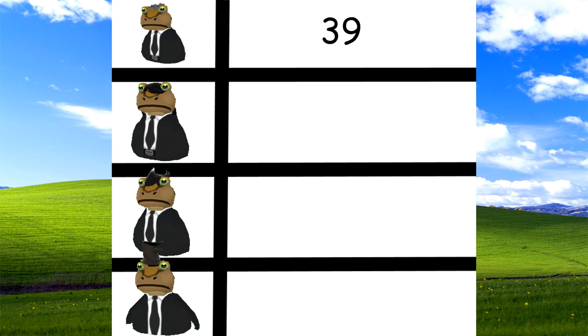John Bell got 39 electoral votes, and John C. Breckinridge got 72 votes, while Stephen A. Douglas got roughly 12 electoral votes, and finally Abraham Lincoln with about 89 electoral votes.